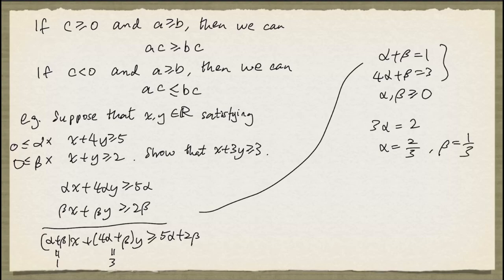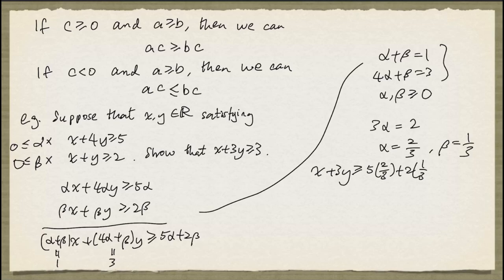So with these values, the left hand side will be x plus 3y. And the right hand side will be 5 times alpha, so 5 times 2 thirds plus 2 times 1 third. And this gives us 12 thirds, which is 4. So we have shown x plus 3y is at least 4 from this series of inferences. But we want x plus 3y greater than or equal to 3. What do we do?